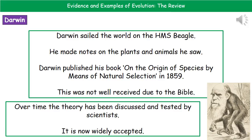While he was sailing around on the HMS Beagle, every time they came to some new area he'd make notes on all the plants and animals that he saw. This included some very detailed sketches and all of the observations that he made. When he returned, he published a book called On the Origin of Species by Means of Natural Selection in 1859.